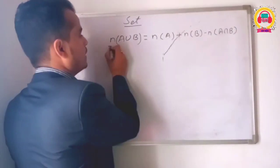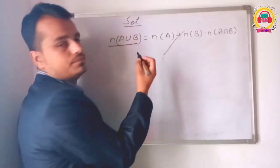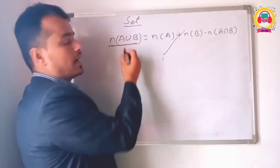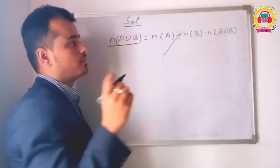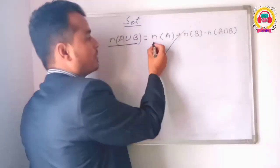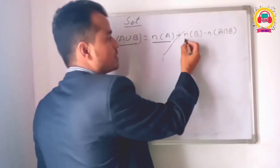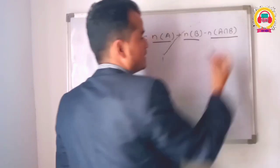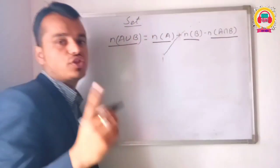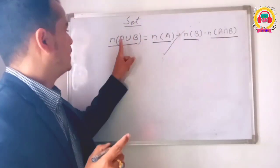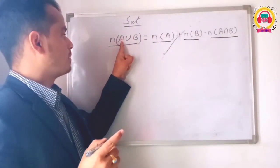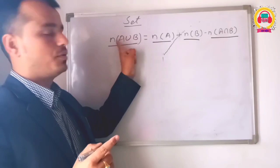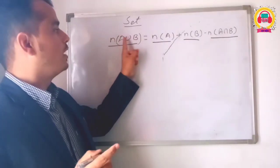We have to write n(A union B). The common element is n(A union B) equals n(A) plus n(B) minus n(A intersection B). We have to understand that n(A) plus n(B) minus n(A intersection B) gives n(A union B).